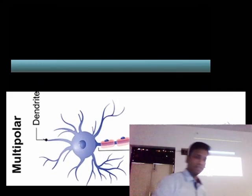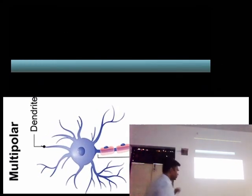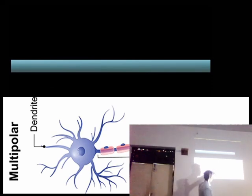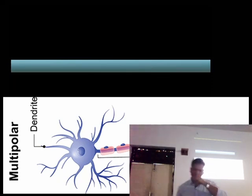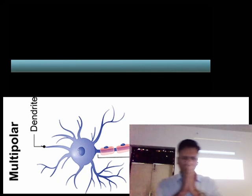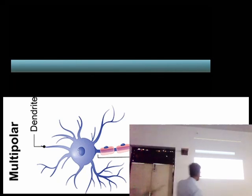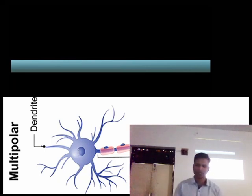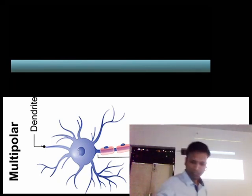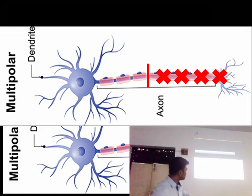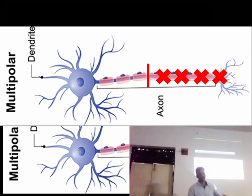Now let's talk about the injury part. We all know that this axon gets its nutrition from the cell body to perform the various actions. For some reason there is total discontinuity — there is an injury and we have discontinuity in this axon region.